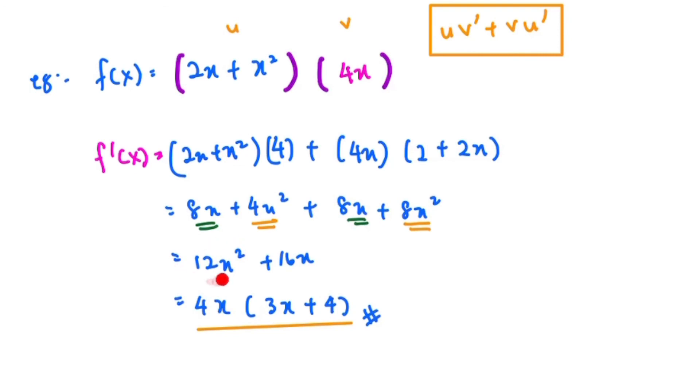So you can see that the common term is 4x. Take it out, factorize it, and inside here is just 3x plus 4. Therefore, this is your final answer.